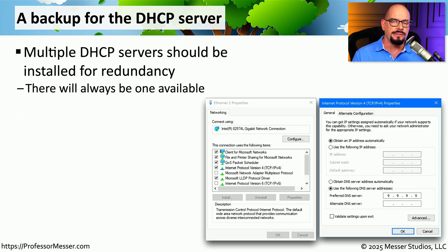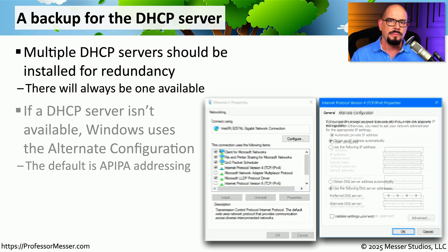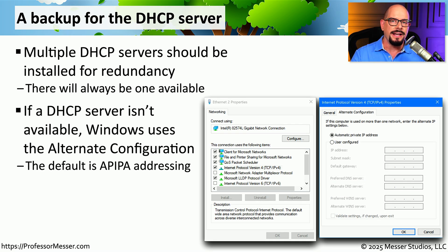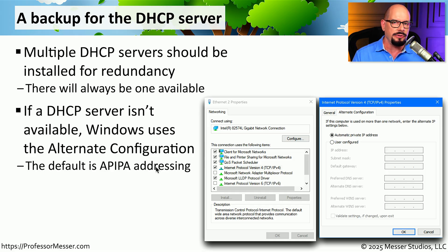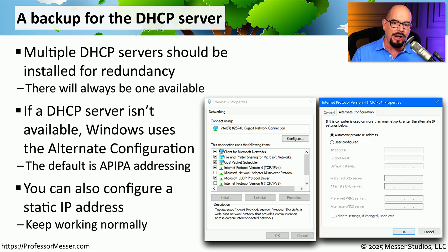At home, you probably have a single DHCP server integrated into your internet router. In a business environment, it's common to have multiple DHCP servers, because that is such an important service — we want redundancy if we happen to lose one of those servers. There may be times when you want to configure your device to use DHCP, but if a DHCP server is unavailable, you don't want your computer assigning itself an APIPA address. Instead, you want to use a predefined alternate configuration, which you can add on a separate tab inside of Windows.